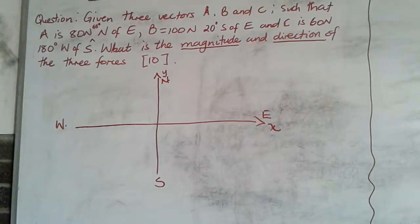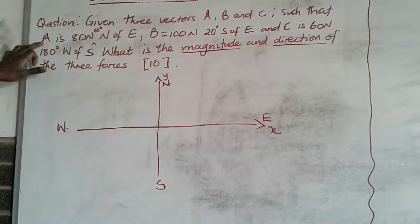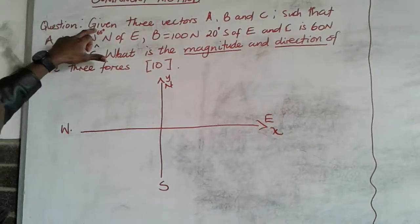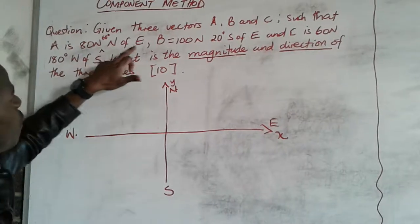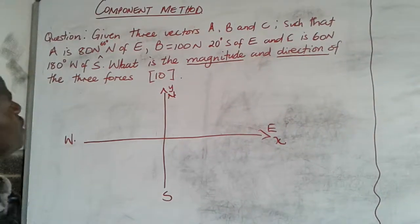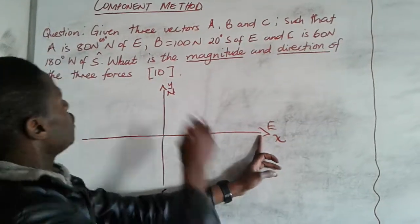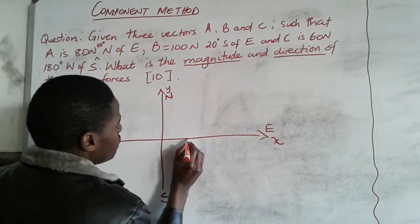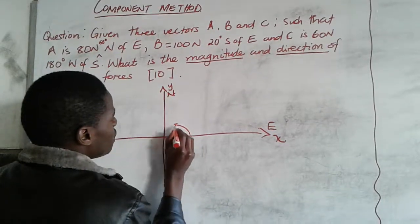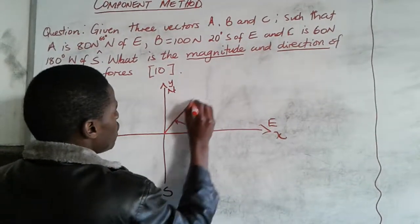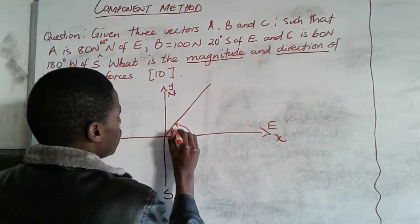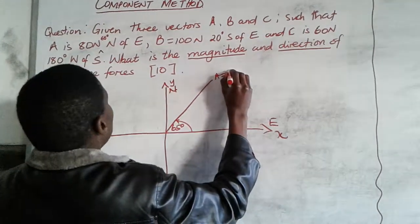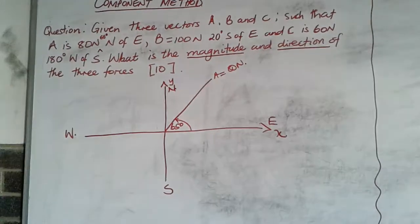We have force A, which is 80 newtons at 65 degrees north of east. That means you start at east and measure 65 degrees going towards the north. This angle here is 65 degrees, and this arrow represents force A, which is equal to 80 newtons.